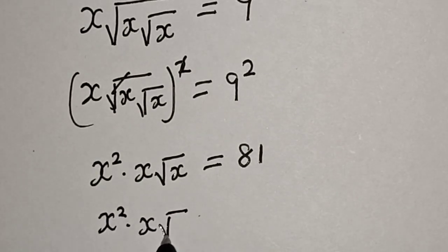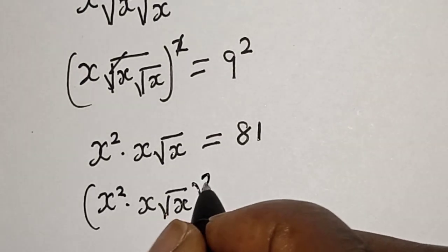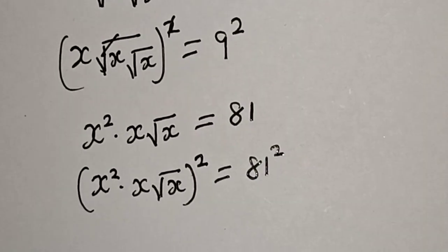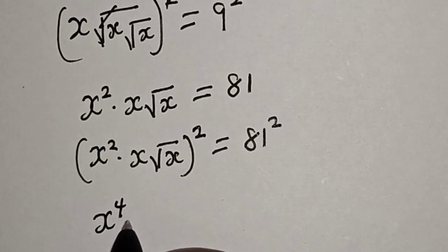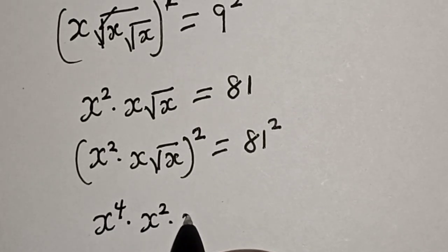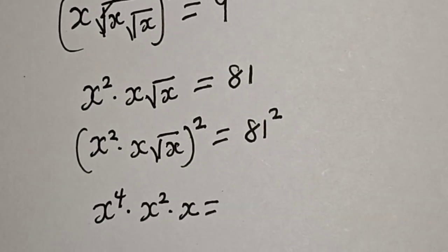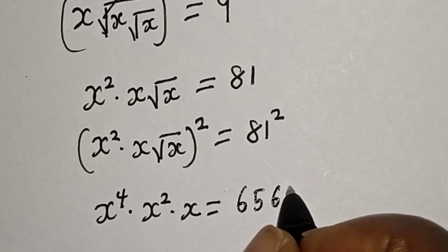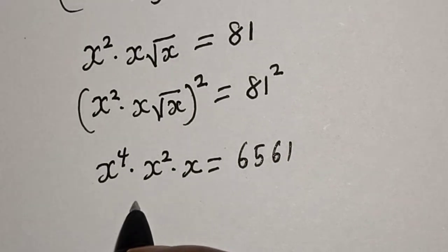Now, also let's take the square of both sides again. s squared times root of s, squared, is equal to 81 squared. Then this is s raised to the power 4 times s squared times s is equal to 81 squared, which is 6561.